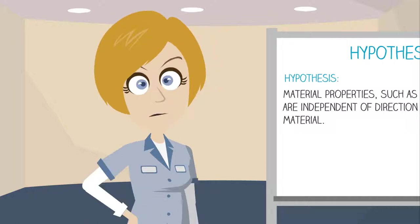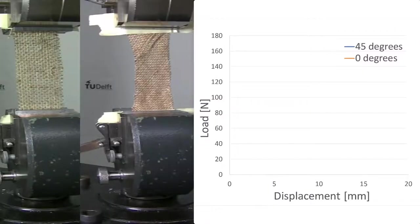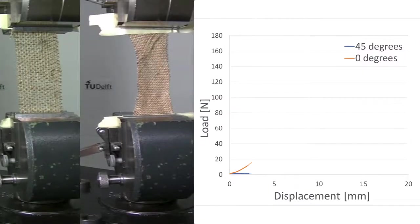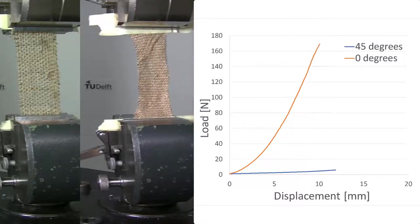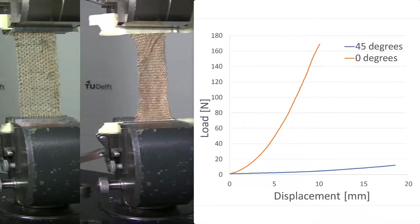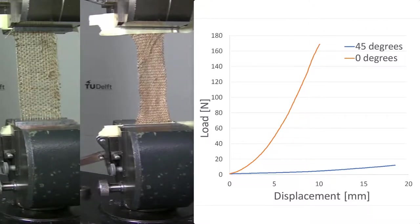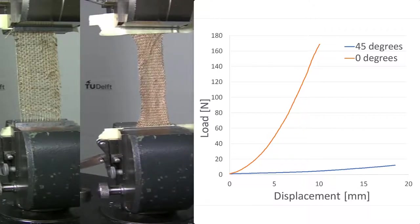The behavior of one material does not necessarily represent the behavior of all materials. So let's test our second material. Here you can see the footage of the burlap material side by side. As with the last test, we can also see the force displacement curves that go along with the tests. And it seems something is very different here.